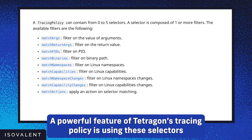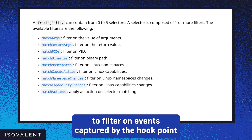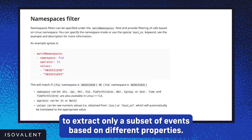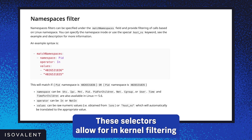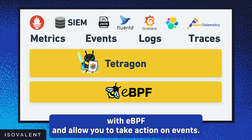A powerful feature of Tetragon's tracing policy is using these selectors to filter on events captured by the hook point to extract only a subset of events based on different properties. These selectors allow for in-kernel filtering with eBPF and allow you to take action on events.